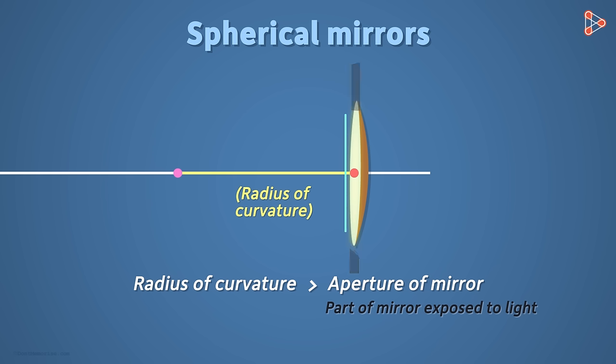Mathematically, it is this length. So, the mirror that we are considering is the one in which the aperture is much smaller than the radius of the curvature.